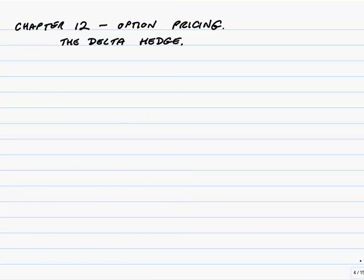This lecture is continuing Chapter 12, and we're going to look at the Delta Hedge. In the previous lecture, we discussed what share options were and how we calculate the price, the value of an option. Now I'm going to explain what a Delta Hedge is and what the arithmetic involved is.